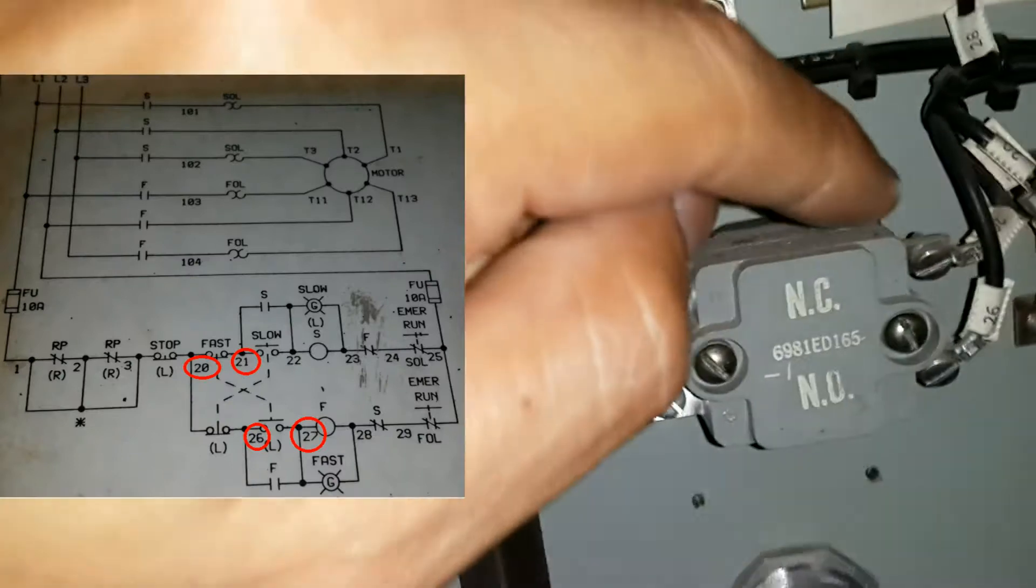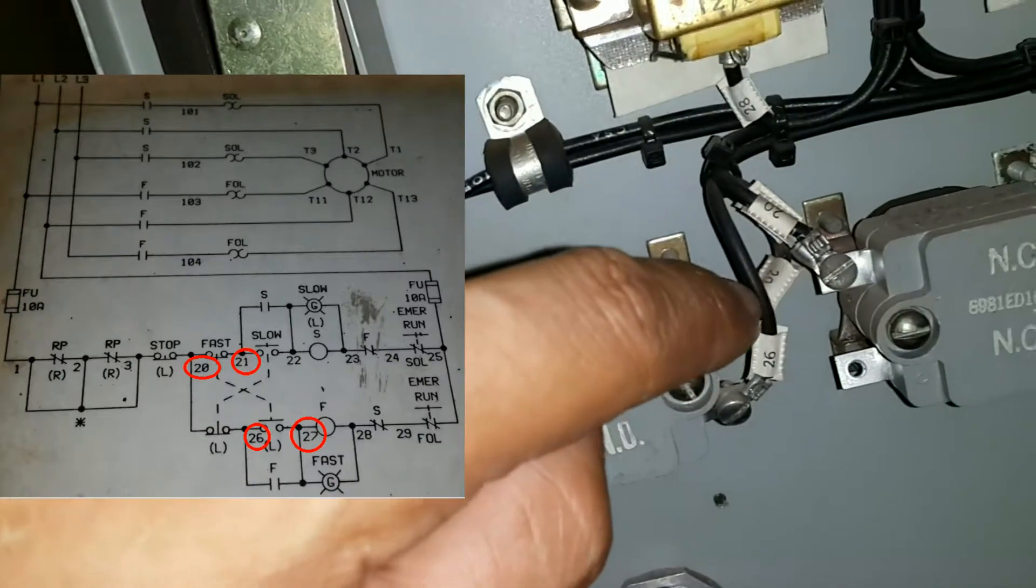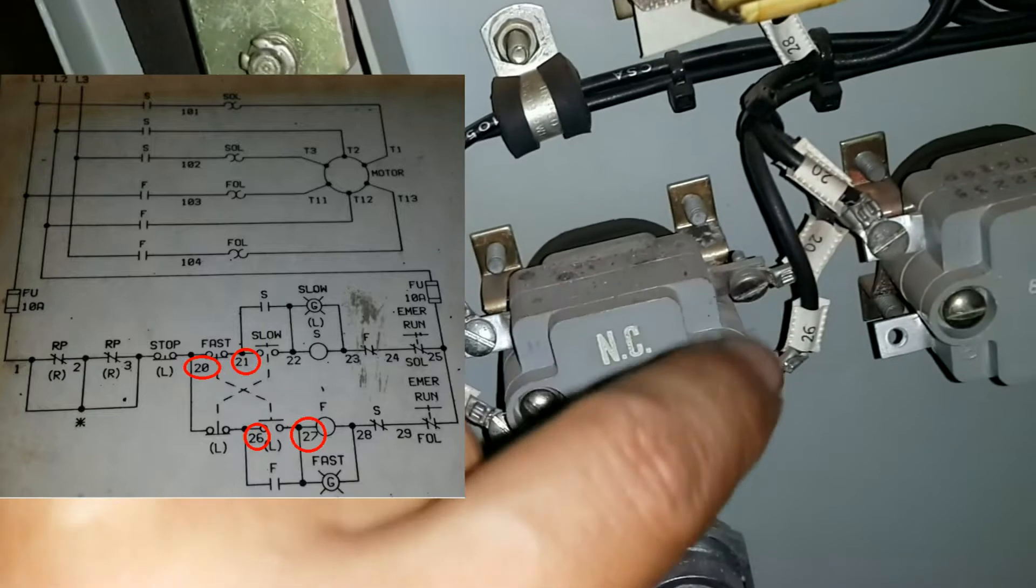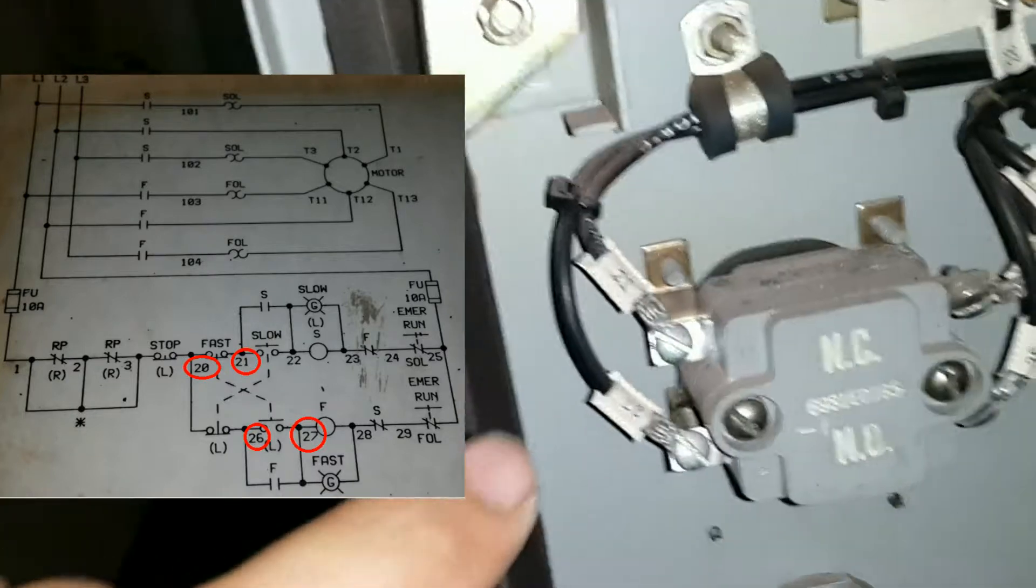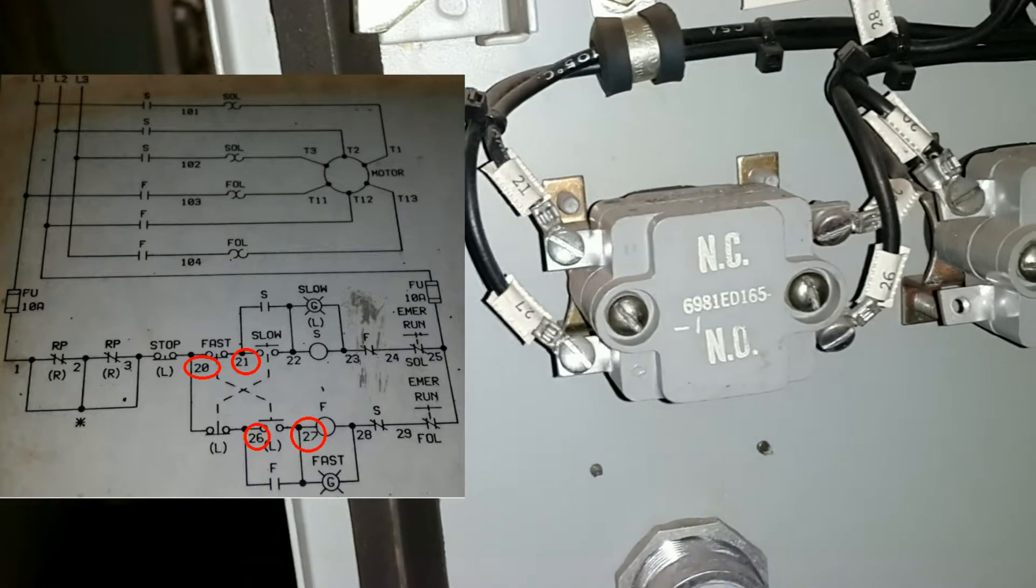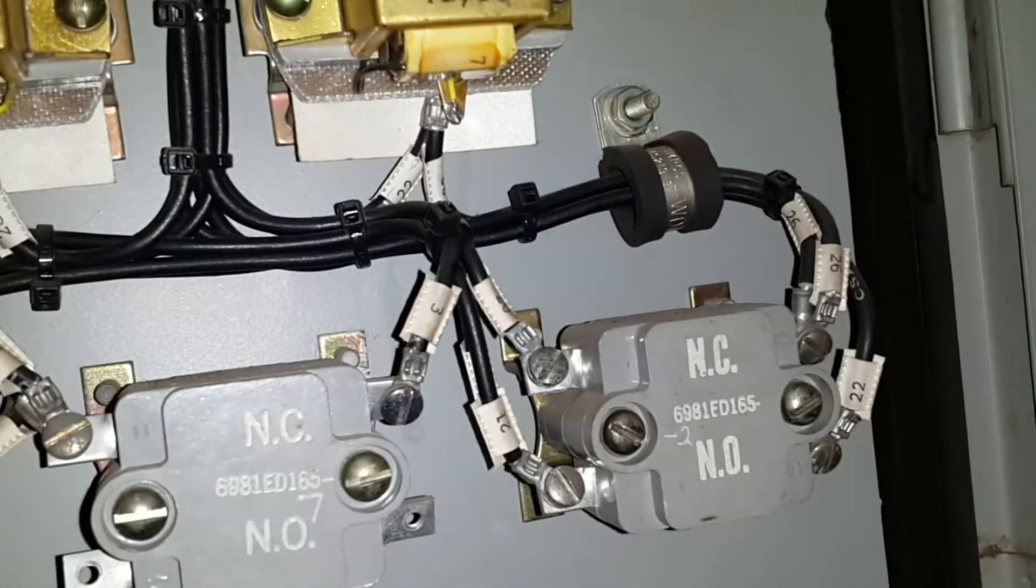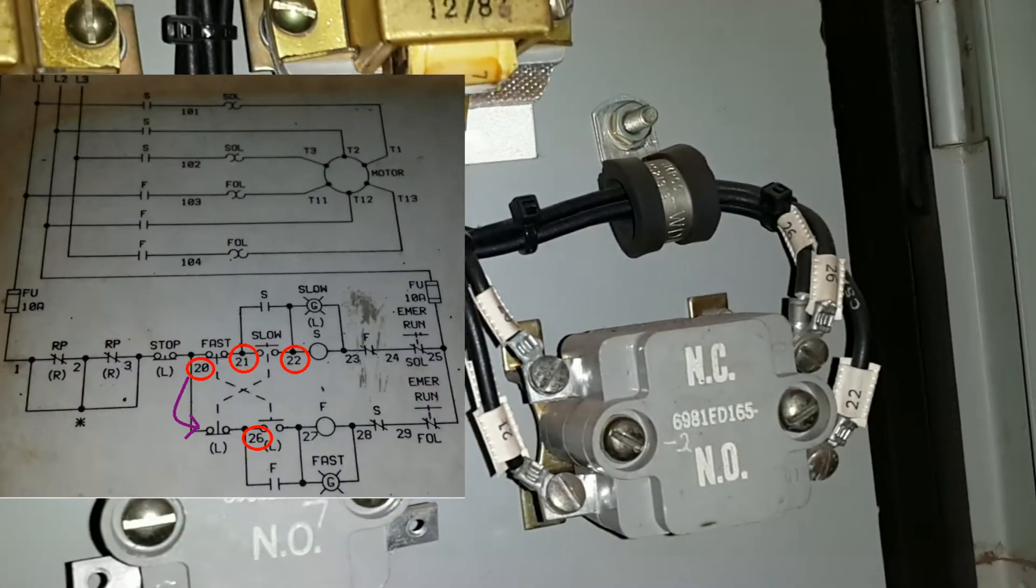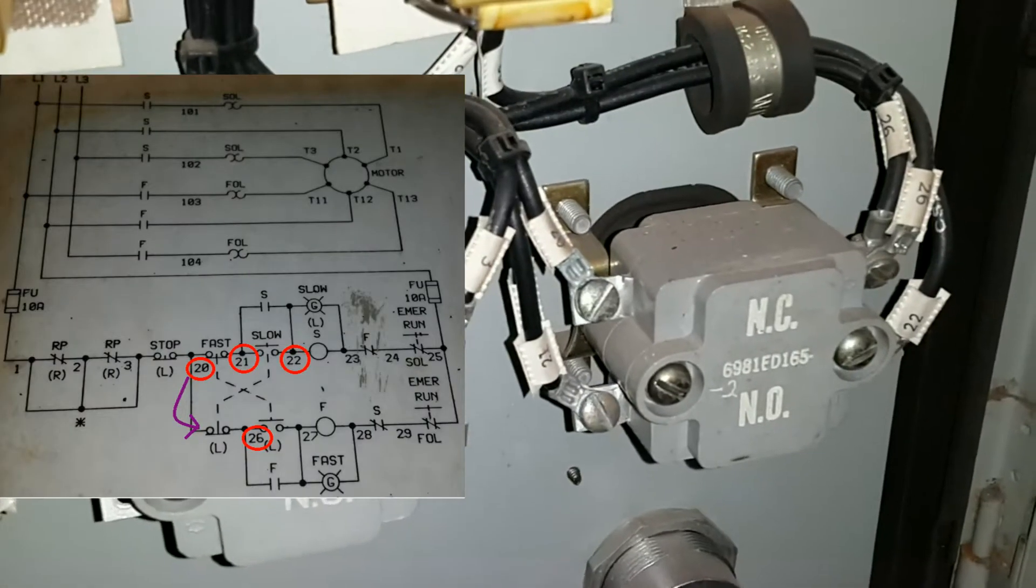As you see to the left, that is my fast speed switch. Therefore, my slow speed switches over here with those cable connections, just as predicted by the schematic.